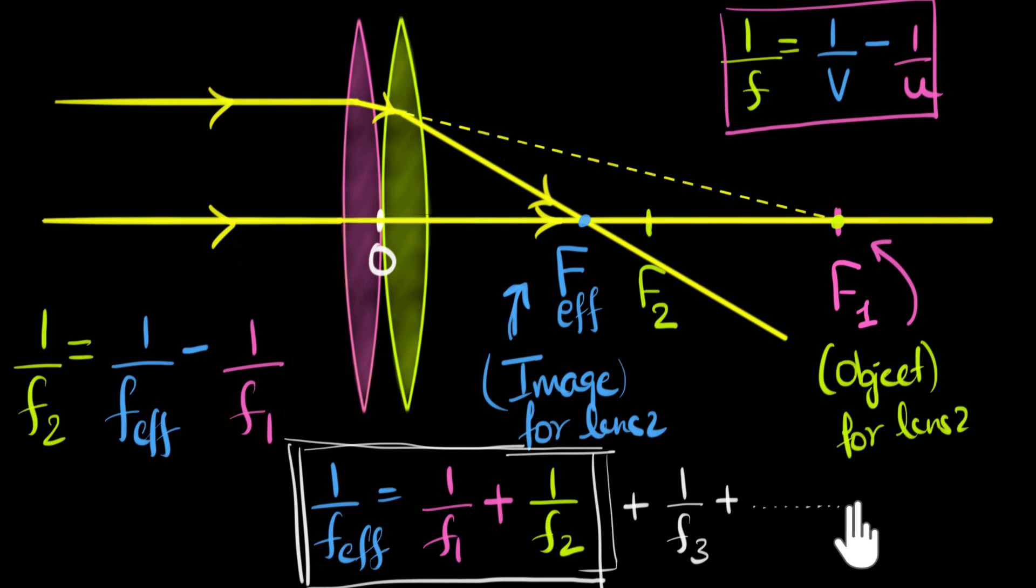For n lenses, we can just keep on doing that. But the important thing to remember is while using this formula, the focal lengths of converging lenses are positive, but for a diverging lens, the focal length will become negative. That's the only thing to take care of. And of course, in practice, we cannot use this formula for n lenses.